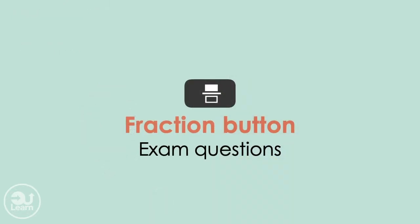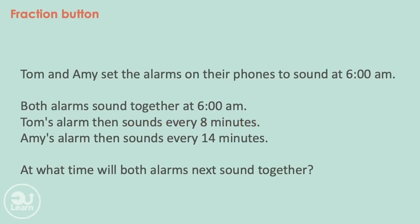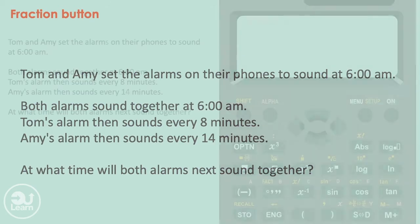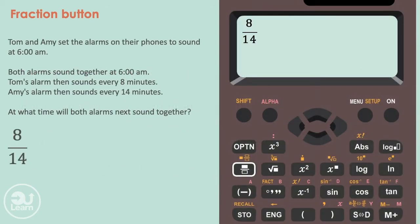Here are a couple of exam-style questions we can use this button for. Tom and Amy set the alarm on their phones to sound at 6am. Both alarms sound together at 6am. Tom's alarm then sounds every 8 minutes and Amy's every 14 minutes. At what time will both alarms next sound together? This is actually a lowest common multiple question — we go up in multiples of 8 and 14 until we reach a common value. We put both numbers into a fraction on our calculator, press equals, and get the simplified fraction 4 over 7. To find the LCM, we multiply 8 and 7 to give us 56.